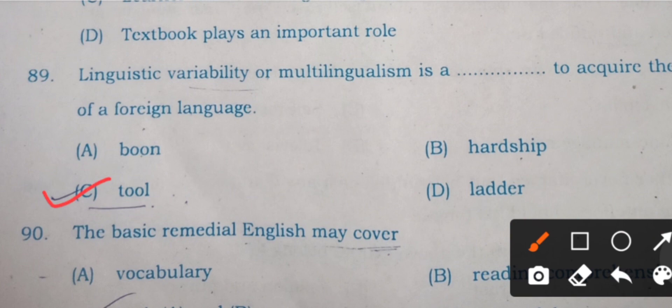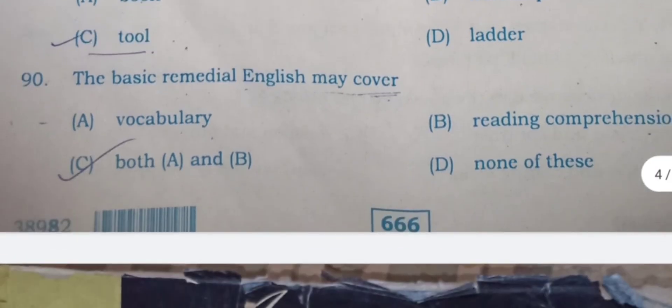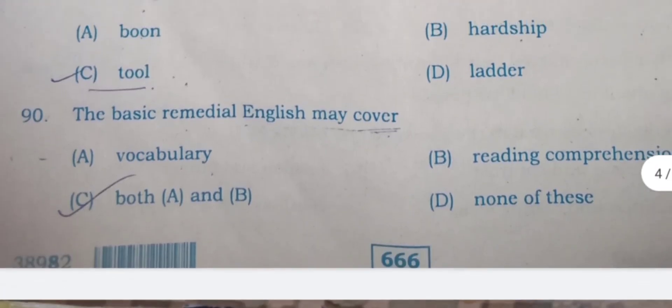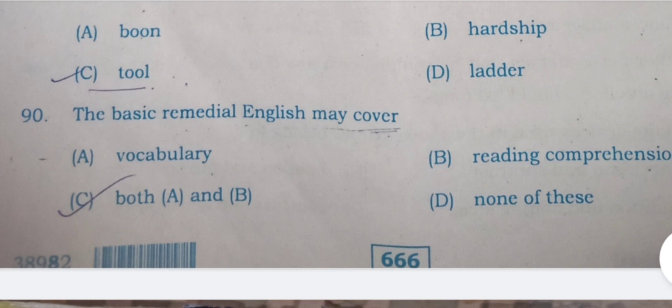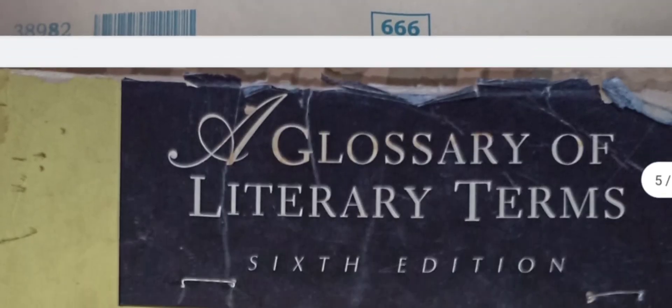Last question: The basic remedial English may cover A) vocabulary, B) reading comprehension, C) both A and B, and D) none of these. Here C is the right answer. Remedial classes should be to improve the vocabulary and reading comprehension of the student. This is all about your level one REET level one and level two examination.